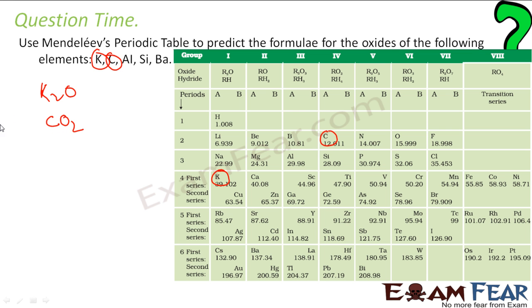So it will be, R is C, CO2 form. So this guy is CO2 form. The next is aluminium. Where is aluminium? Aluminium is here in the group 3, R2O3. So it will be Al2O3.